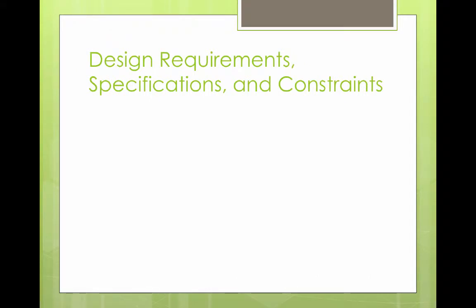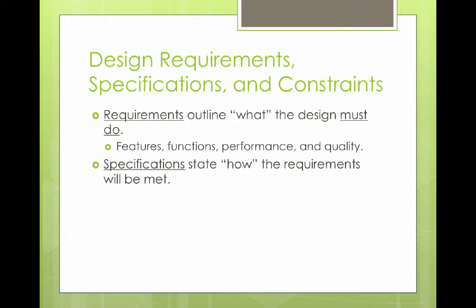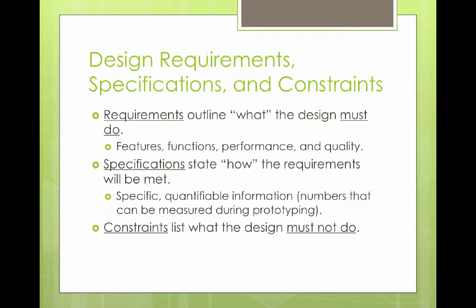Next, we move to deciding what the requirements, specifications, and constraints are for the design. Requirements are what the design must do — what your design is intended to be able to do and how it's going to do it. This includes the features the design has, how it works, how it should perform, and what kind of quality it should have. Specifications, generally within the requirements, are how the requirements are going to be met — these include numbers we can measure during prototyping, so quantifiable information. Constraints are what the design must not do; these are limits on our design.